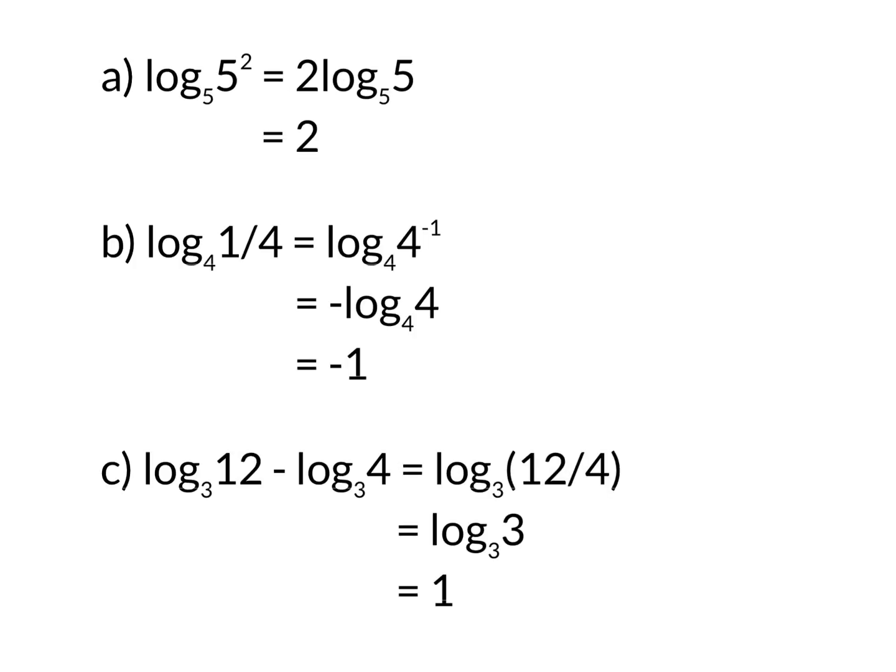So for the first one, that's the rule where we bring the power down the front. So log base 5 of 5 to the power of 2, we bring the 2 down the front, we get 2 log base 5 of 5. And log of any base to itself is 1. So we get 2 times 1, which is just 2.